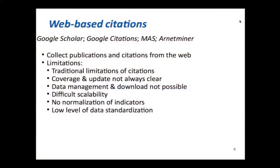The second group of tools is what we call web-based citations. We could argue whether these are actually altmetrics, since what they do is collect publications and citations from the web. The difficulty in scalability makes normalization of indicators difficult, as you cannot establish reference values for disciplines. There is also the problem of low data quality — Google Scholar still has many issues, including duplicated citations where two versions of the same paper both count as separate citations.